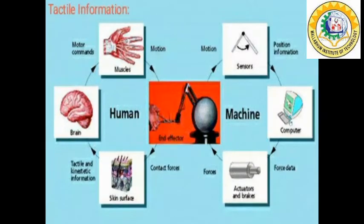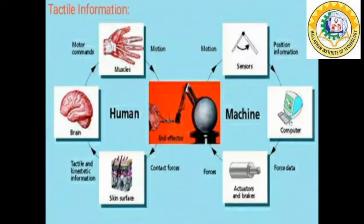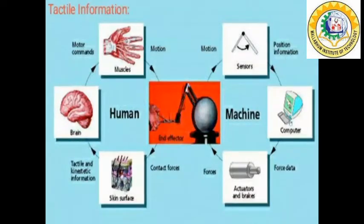Tactile information is the practice of encoding information that people can interpret with their sense of touch. It is used to provide accessible, safe, and engaging designs. The common types of tactile information are braille, tactile paving, tactile controls, and haptics.